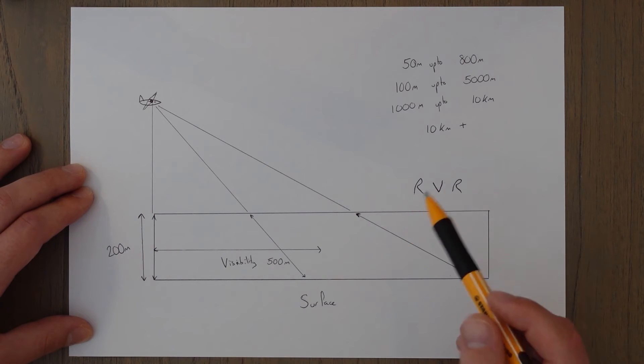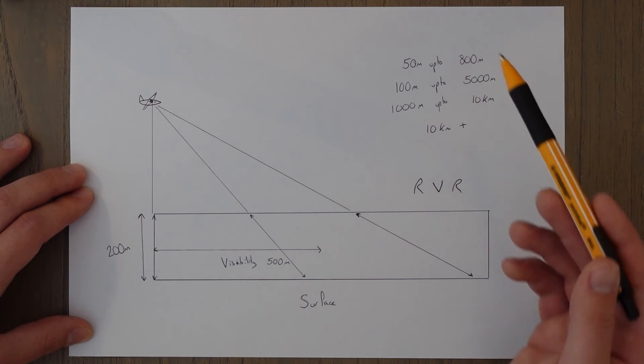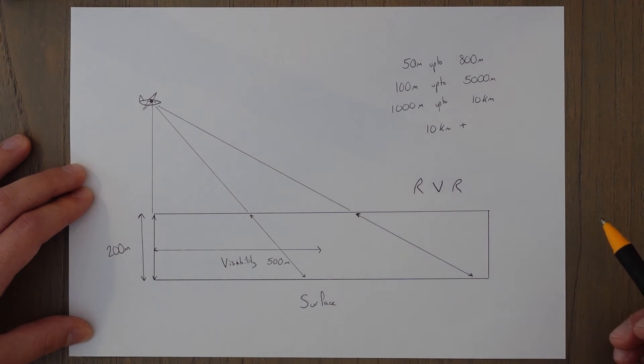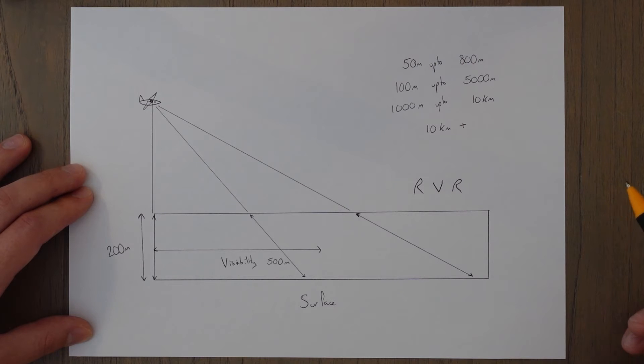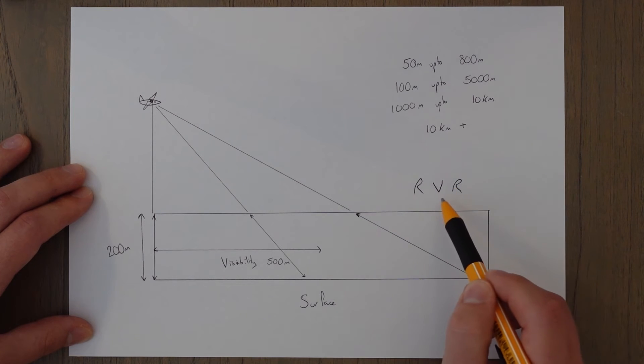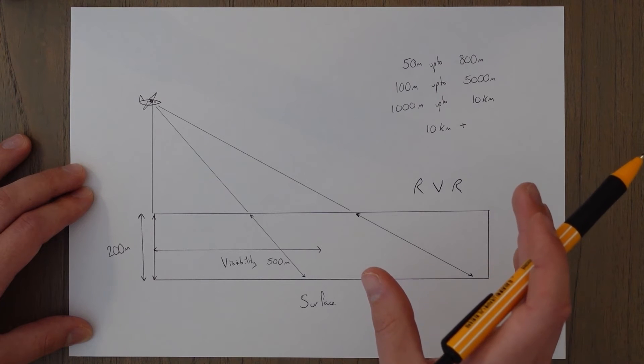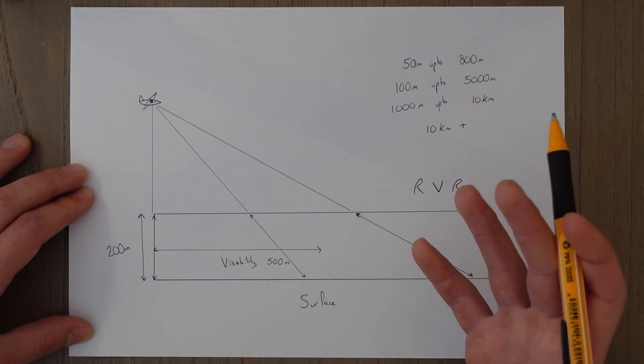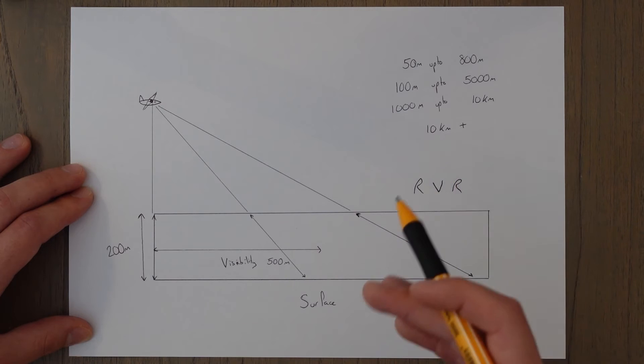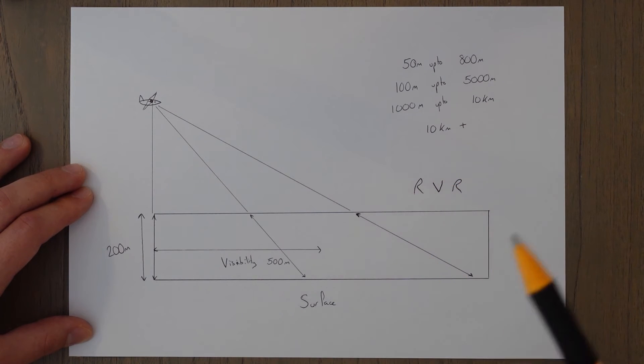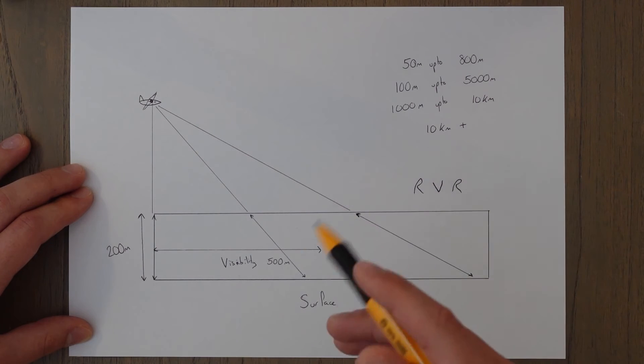So the airport might have a general visibility of 700 meters for example, but the specific landing runway might have a reported runway visual range of 300 meters, and that would require special procedures. And the RVR is basically runway specific visibility whereas visibility in general is just the airport's overall visibility.